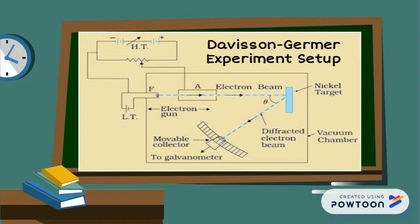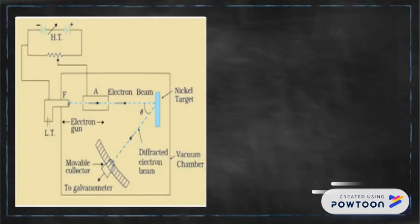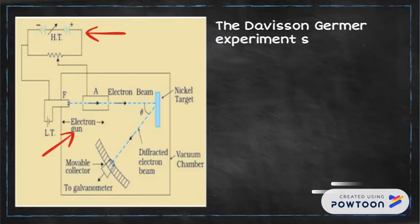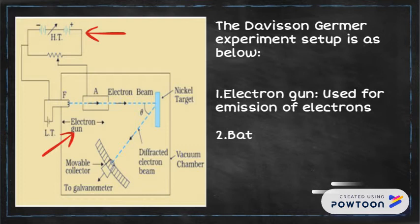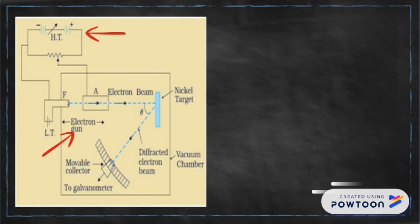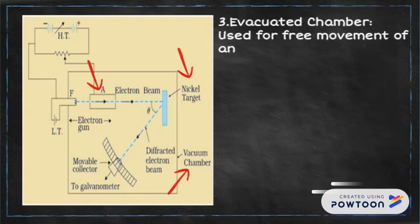The Davison-Germer experiment setup is as below. Electron gun, used for emission of electrons. Battery, used for acceleration of electrons inside the cylinder. Evacuated chamber, used for free movement of an electron without air resistance. Cylinder, used to accelerate the electrons. Nickel target, used to deflect electron beam towards a detector.